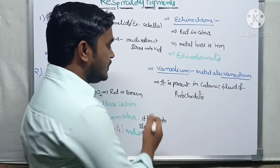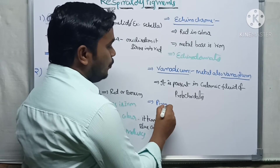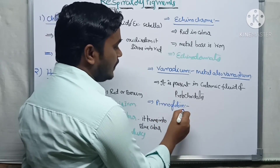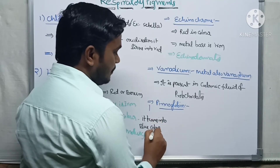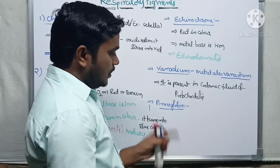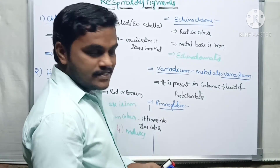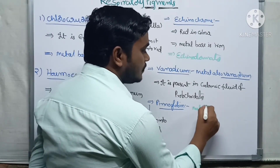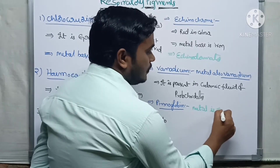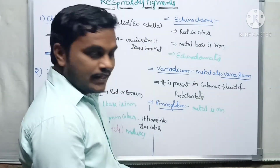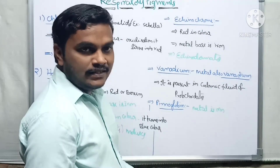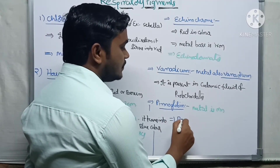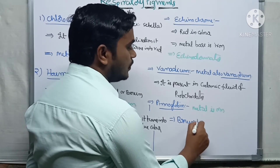One more respiratory pigment is pinnaglobin. The metal ion here is manganese. Pinnaglobin is a brown pigment — it is brown in color — and the metal base is manganese.